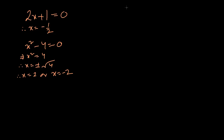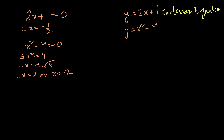When we have two unknown values, for example y equals 2x plus 1, or y equals x squared minus 4, both are equations but this is a bit different — this particular equation has two unknown values. We call this a Cartesian equation. The only difference is that in a standard equation we have zero on one side, whereas here we have another unknown variable. A Cartesian equation is made up of two unknown variables, numbers, arithmetic operations, and an equal sign.